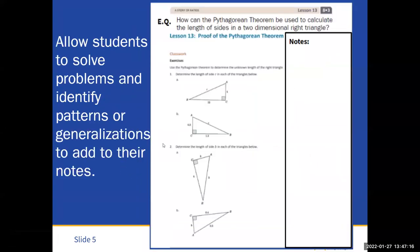And again, here's another Eureka Math page. And I provided them with an EQ. How can the Pythagorean theorem be used to calculate the length of sides in a two-dimensional right triangle? So that is what we are asking them to do. That is the standard. So we just made that into the essential question. And then we allow students to solve the problems and identify patterns or generalizations that they can add to their notes.